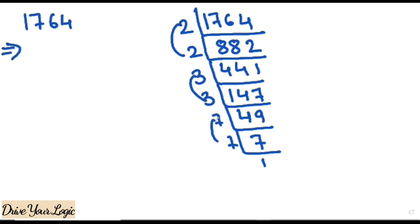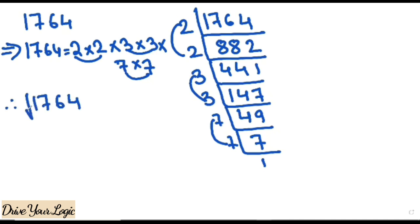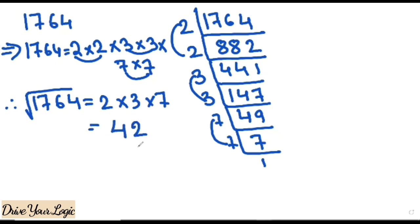Steps are very important if you are writing your school exam, so write down the full process. Now find pairs: here is one pair, here is one pair, here is one pair. So the square root of 1764 — from each pair take one number: one 2, one 3, one 7 — and the answer is 2 × 3 × 7 = 42. That means 42 squared is 1764.